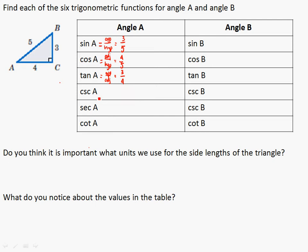The cosecant goes with the sine — when you flip it, S becomes C — so the cosecant is 5 over 3. The secant is the cosine flipped: the cosine was 4 over 5, so the secant is 5 over 4. And the cotangent: the tangent was 3 over 4, so flip it to get 4 over 3.